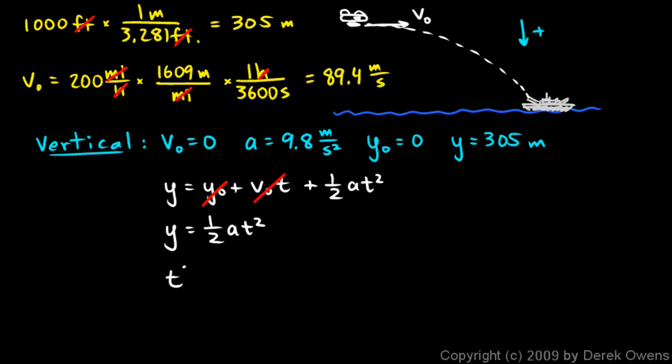Rearranging this equation algebraically gives me t squared is equal to 2y over a, which is 2 times 305 meters divided by 9.8 meters per second squared. And these meters cancel, leaving me with seconds squared. This comes out to, punch all that in the calculator, I get 62.2 seconds squared. And that's t squared. And I take the square root of both of those and I get t. t comes out to be 7.89 seconds.